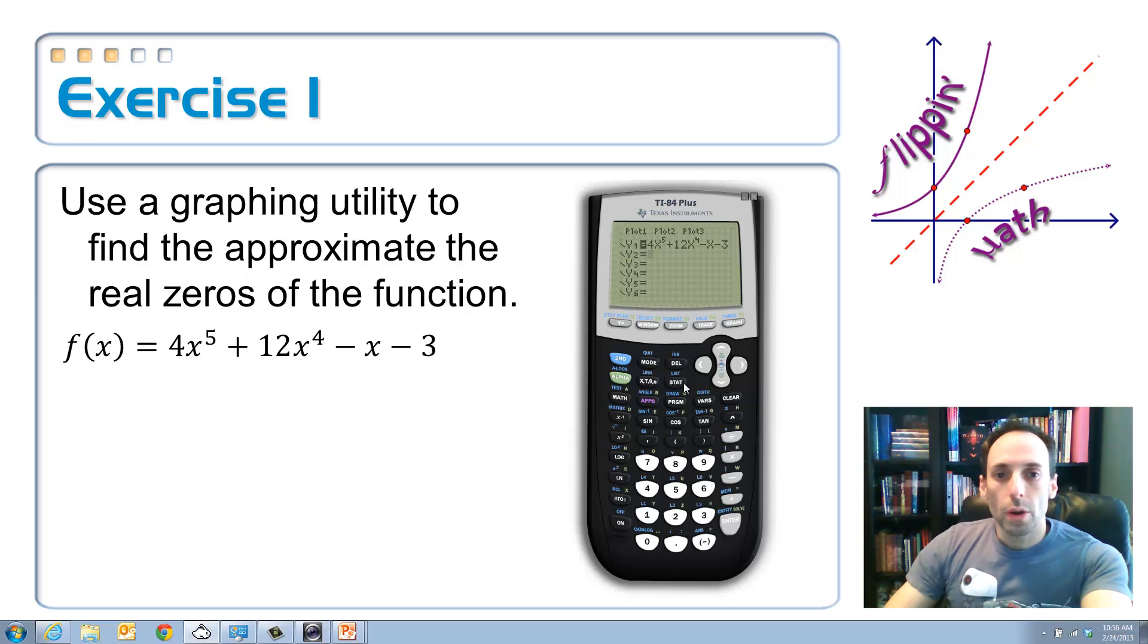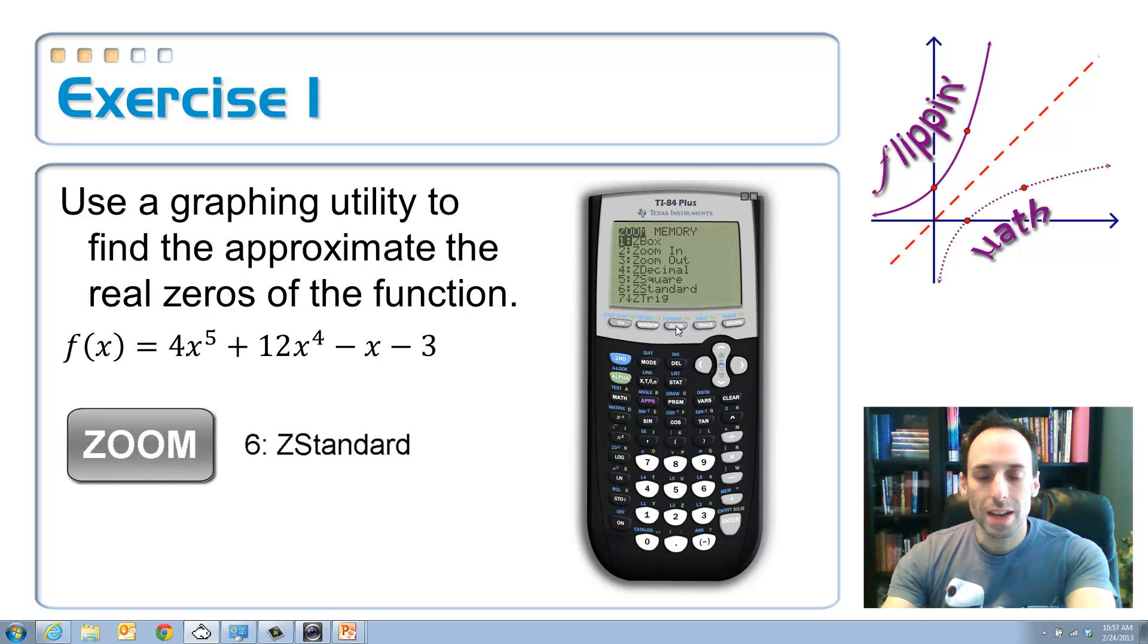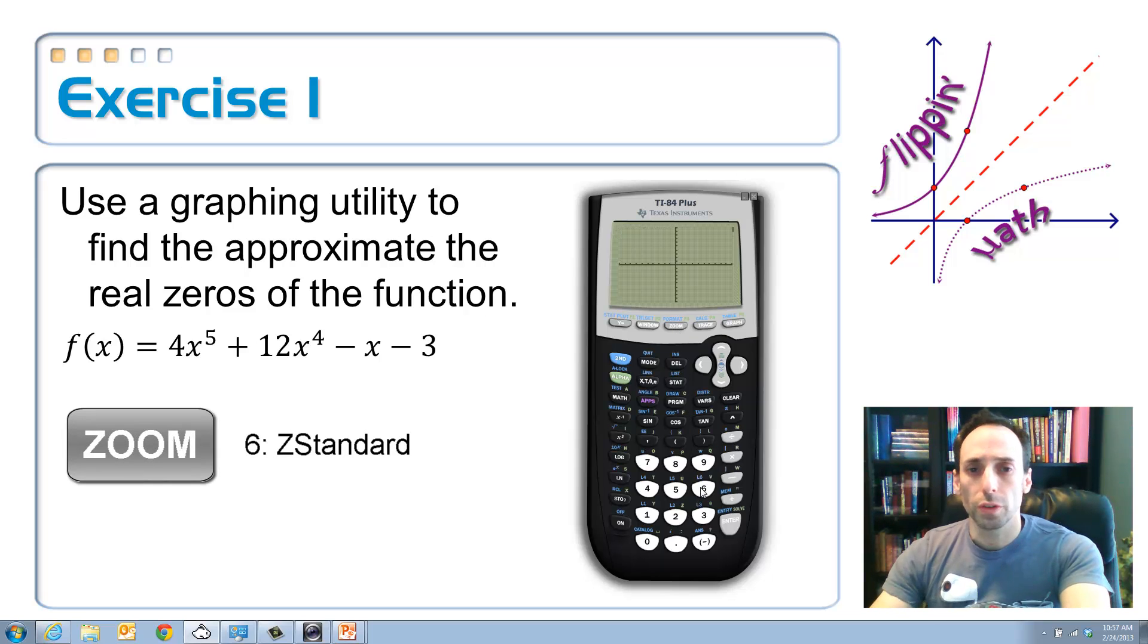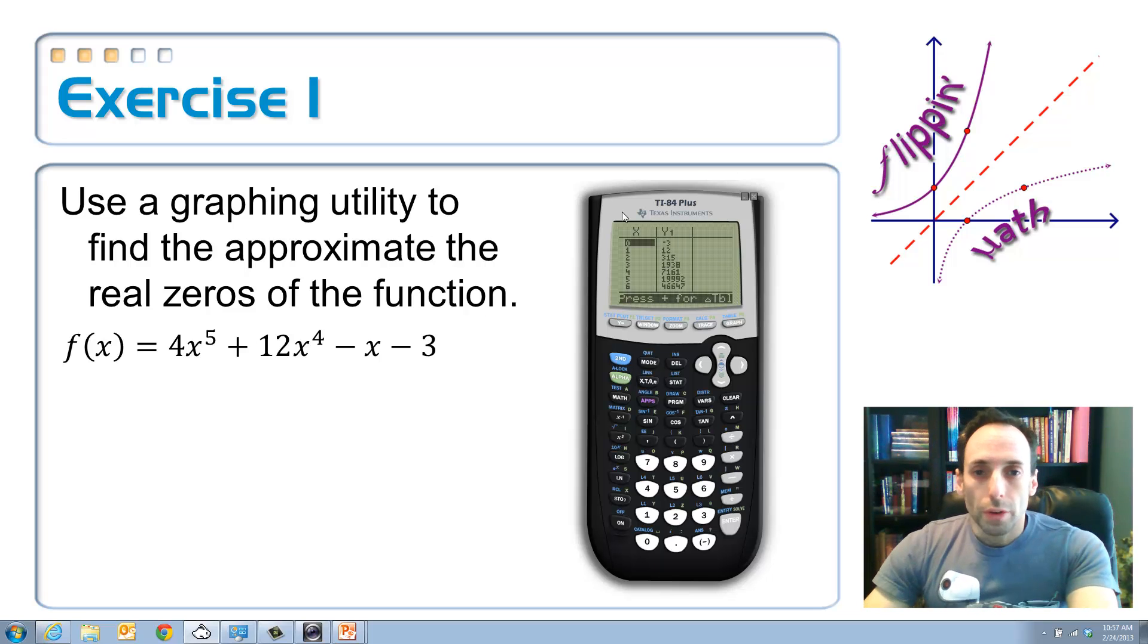I hit enter on that. Now, instead of just going to the graph menu, let's go to zoom. And our favorite one is zoom standard number 6. So, the standard goes from negative 10 to positive 10 on both of these axes. All right. So, take a look. The first one looks like it's at negative 3. It looks like it crosses exactly through negative 3. So, let me just confirm that by looking at the table, second graph.